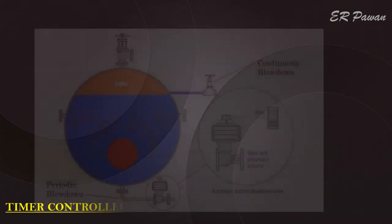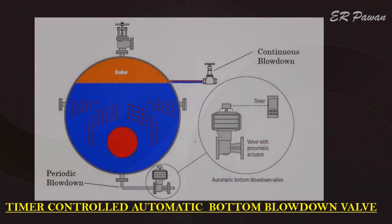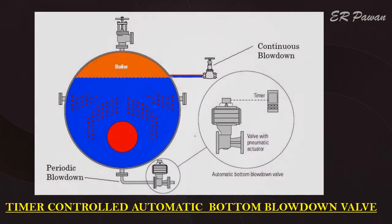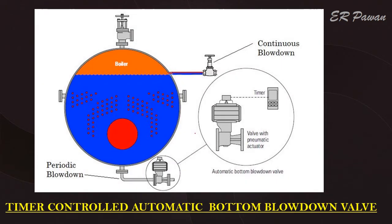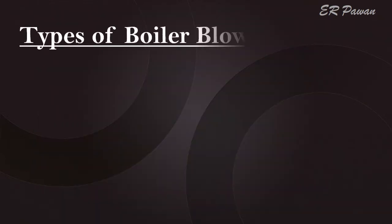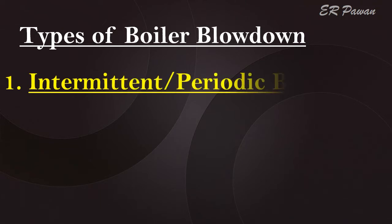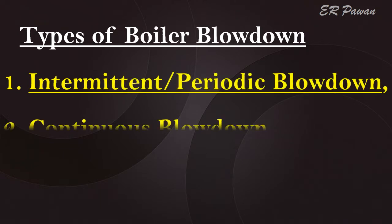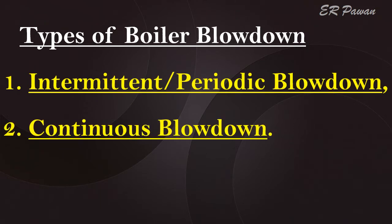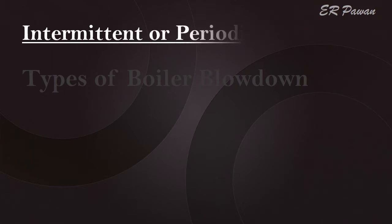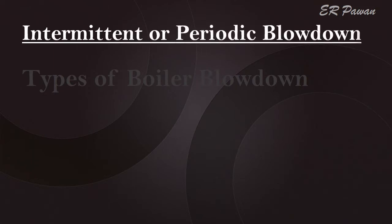Timer Controlled Automatic Bottom Blowdown Valve. Types of boiler blowdown: 1. Intermittent or periodic blowdown. 2. Continuous blowdown. Let's understand both kinds of blowdowns.